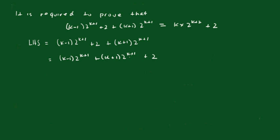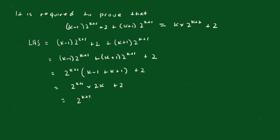Now I can see I've got 2 to the k plus 1 as a common factor, which I'll take out: 2 to the k plus 1 times (k minus 1 plus k plus 1), plus 2. This becomes 2 to the k plus 1 times 2k, plus 2. We can add the indices together, giving 2 to the k plus 2 times k, plus 2 — which equals k times 2 to the k plus 2, plus 2. That equals the right hand side.